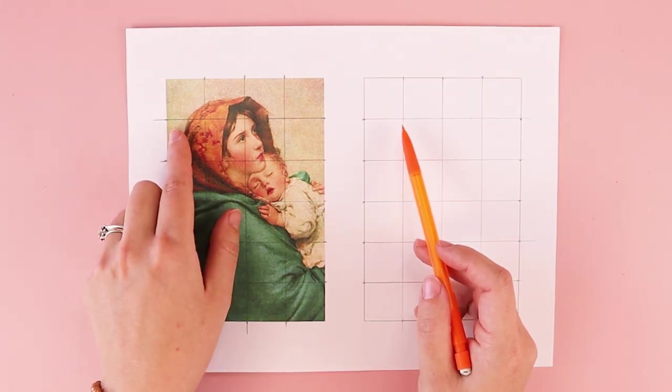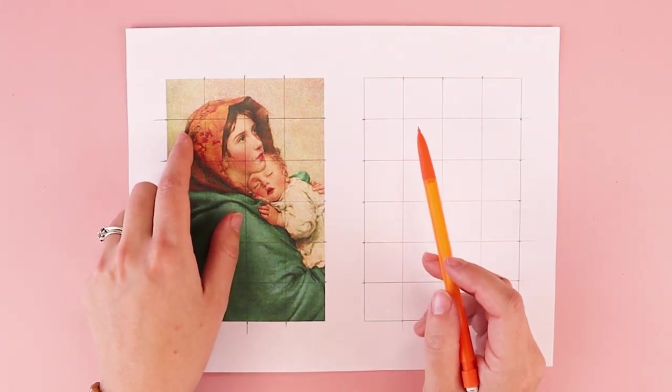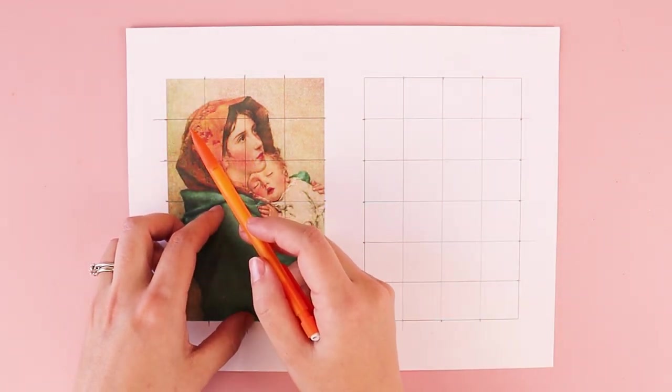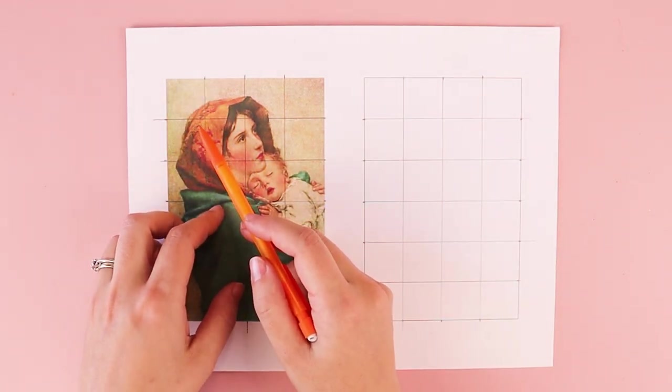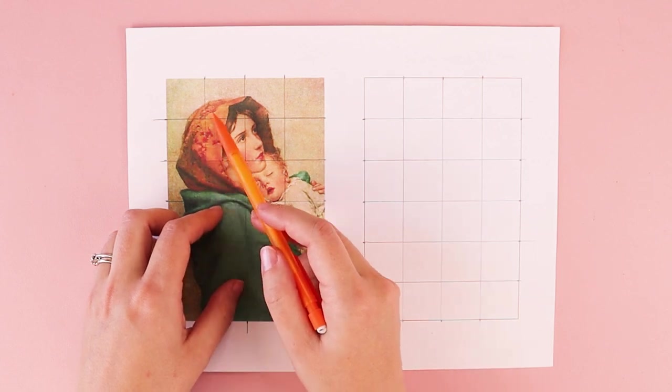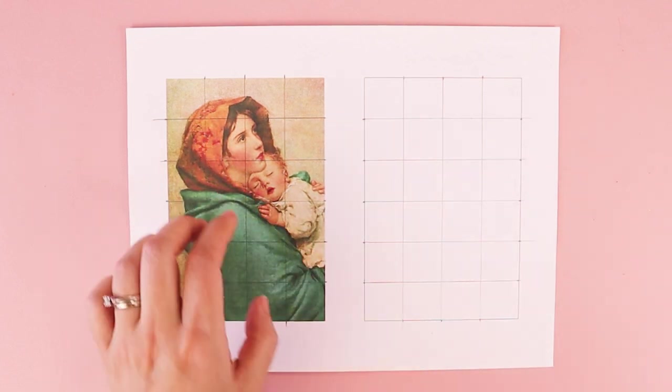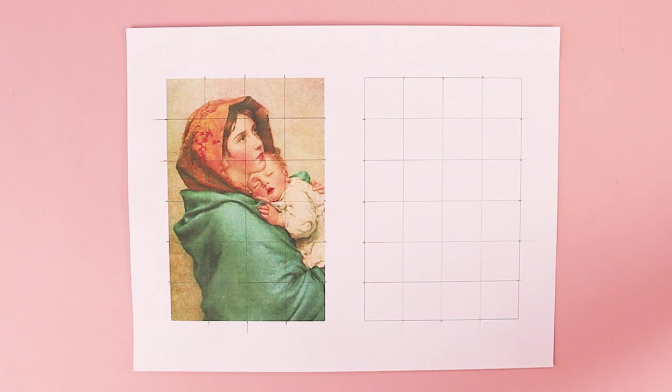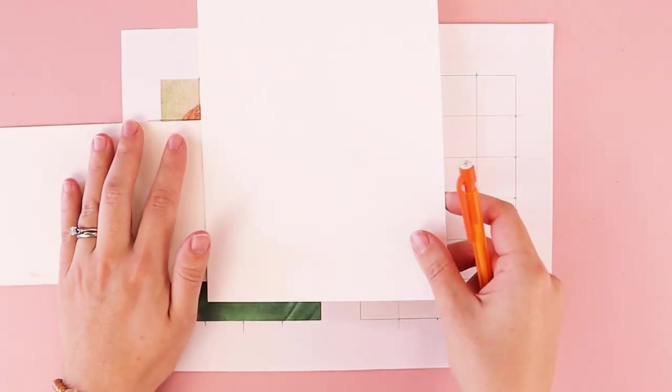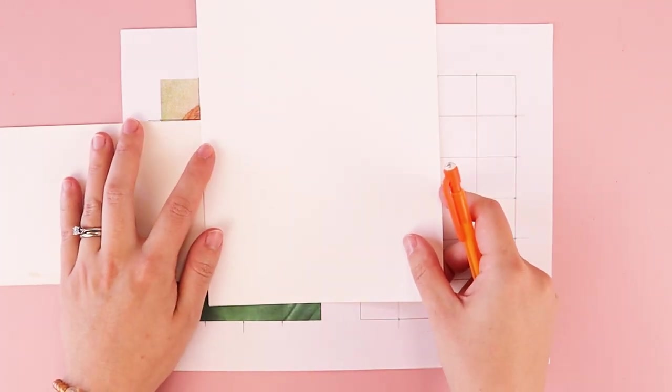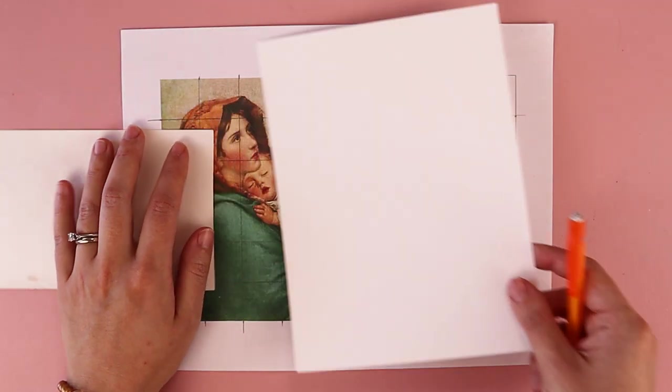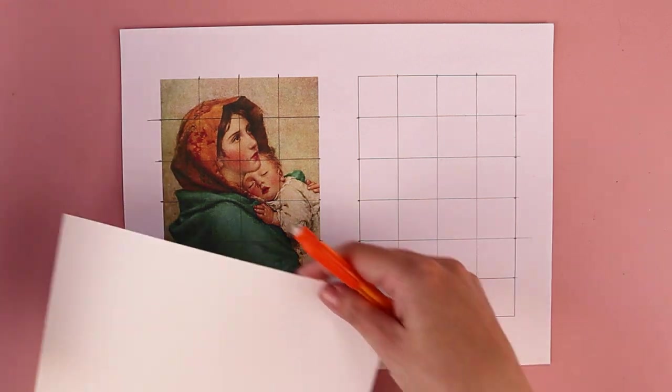So basically what you want to do when you're doing the grid drawing method is you're looking at one square of your reference picture at a time and you are drawing what you see in that square. And one thing that you can do is you can block off that one square.